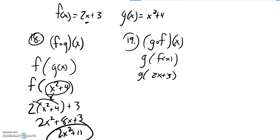So g is input squared, some input squared plus 4. That input is f, which is 2x plus 3.